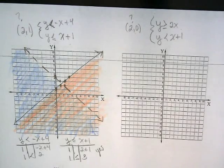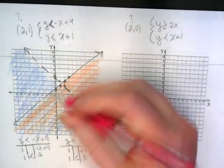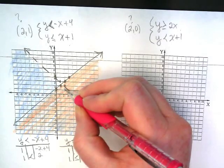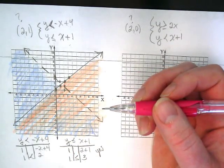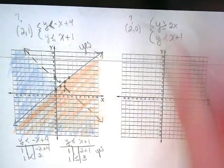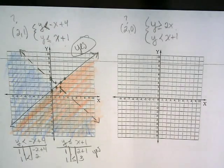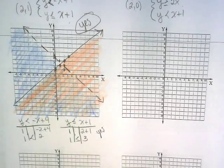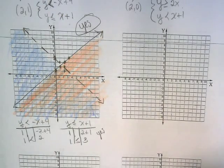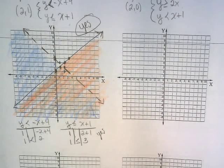Now, which ordered pair did we start off asking about? 2-1. Where is 2-1? There's 2. There's 1. 2-1. Is it in our double shaded area? Yeah. So then the answer to this is that this is a yes. And we proved it two ways. We plugged the x-y pair into both inequalities down here. And we also found that the double shaded area, everything that's in this double shaded area, could be an ordered pair that would make these inequalities true.